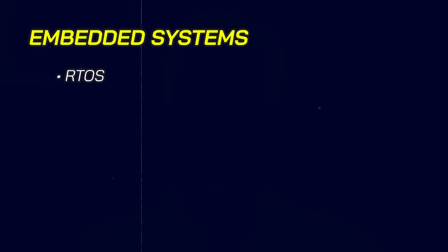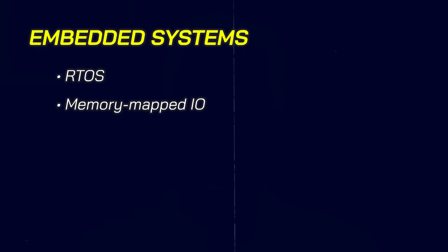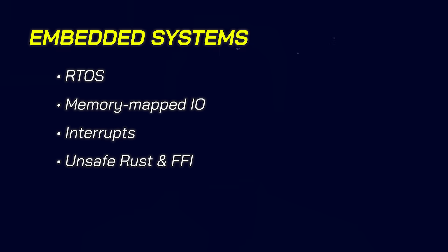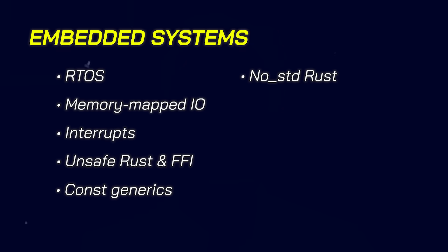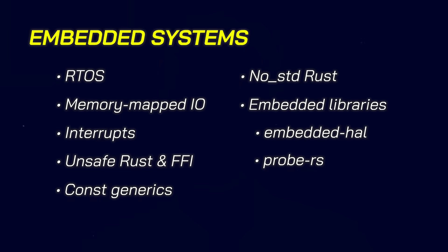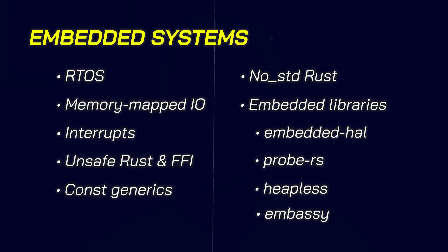On the other hand, if you're building embedded systems, you'll need an understanding of real-time operating systems, memory-mapped IO, interrupts, unsafe Rust and the foreign function interface, const generics, using Rust without the standard library, and embedded libraries like Embedded HAL, Probe RS, Heapless, and Embassy.